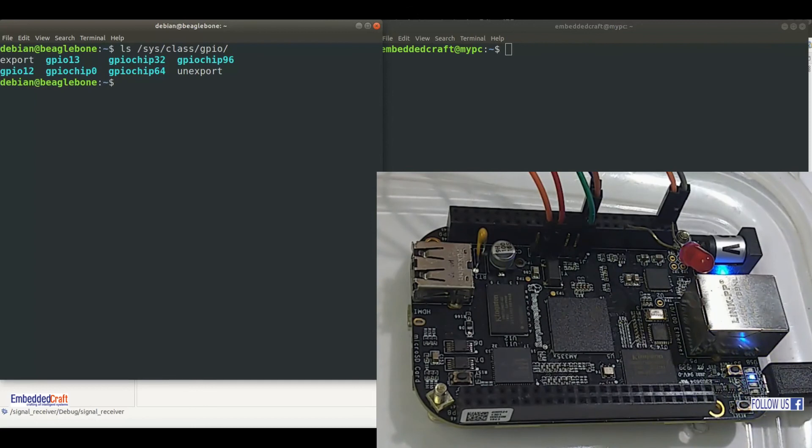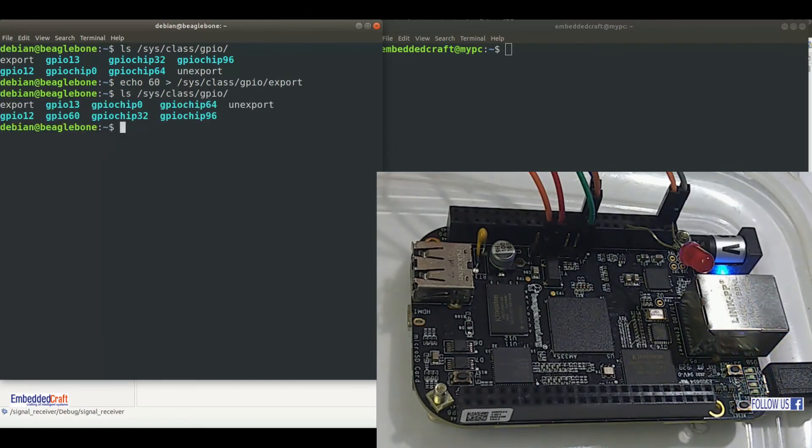We don't have GPIO60. We can do this by writing 60 to the export file in GPIO. Type echo 60 to root sys class GPIO export. Now we have GPIO60. We are good to go now.